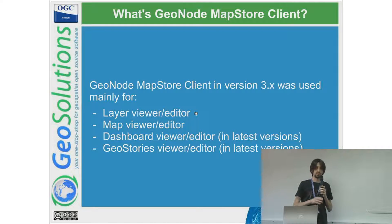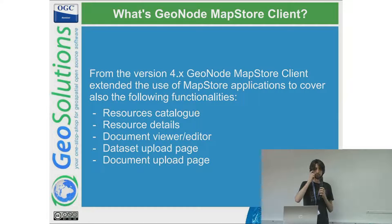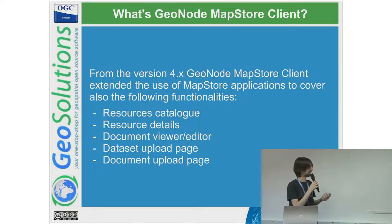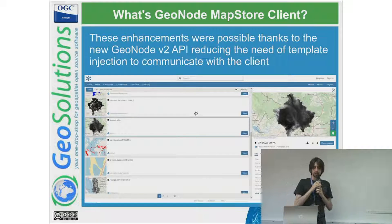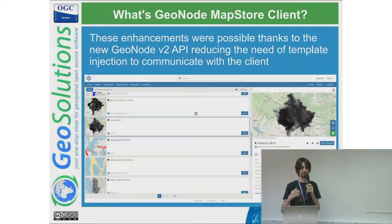GeoNode-MapStore client version 3 uses MapStore and the MapStore framework, which provides the map viewer, layer viewer, dashboard, and GeoStories. When we moved to version 4, we worked to enhance the home page, catalog page, display details directly in the catalog without switching pages, and added a document viewer and upload through new interfaces. This was possible because of the new API v2 — we no longer need injection from Django template tags, though we still use those to pass variables to the client. The preferred communication now goes through API v2.